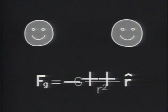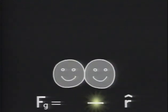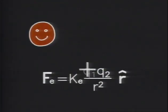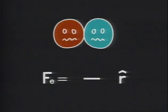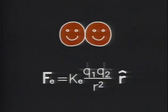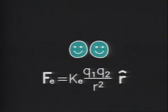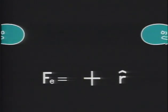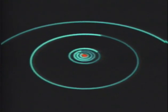Since mass is always positive, gravity always attracts. Charge, however, can be either positive or negative. A positive and negative charge will attract. Two positive charges will repel, as will two negative charges. Otherwise, just as their formula states symbolically, gravity and electricity are so much alike that an atom, with a little rearranging, looks almost like a little solar system.